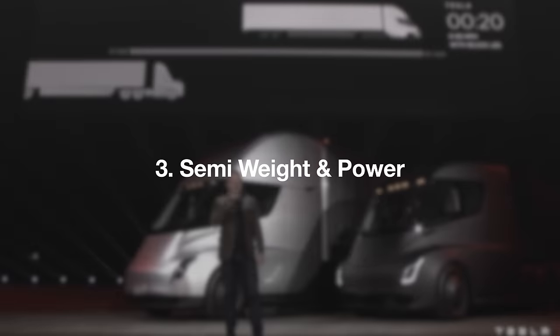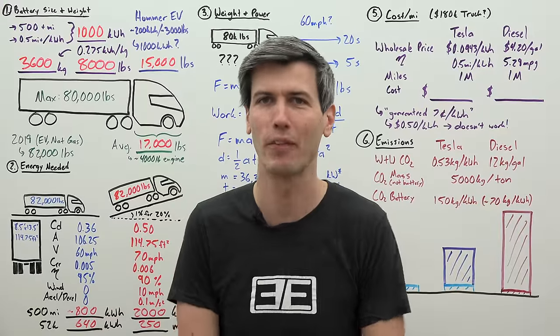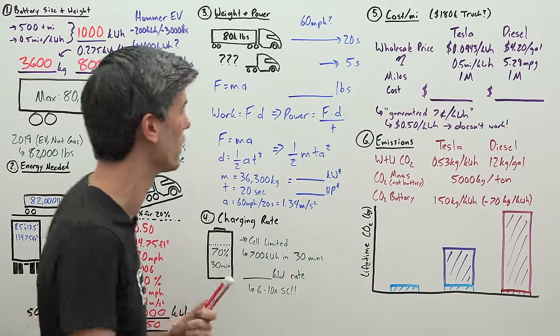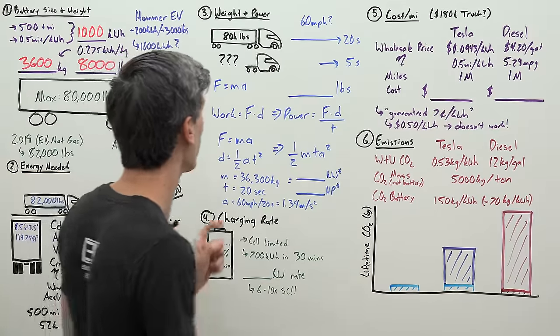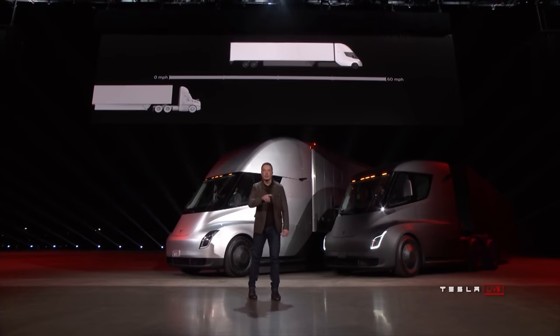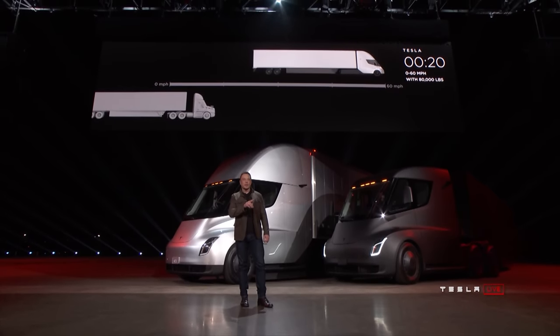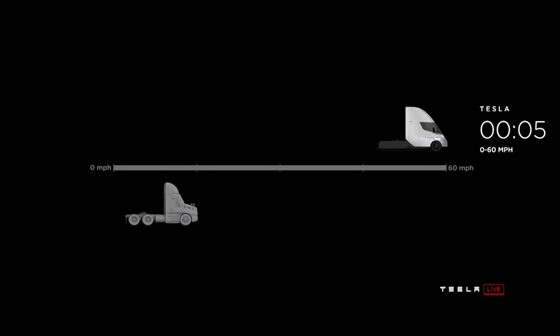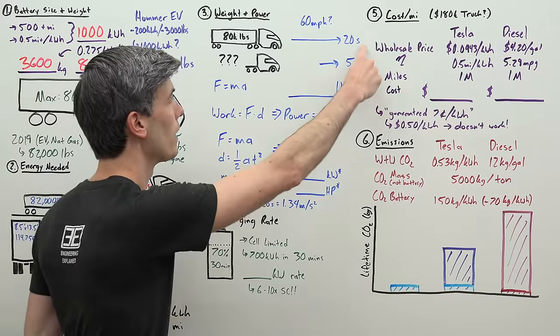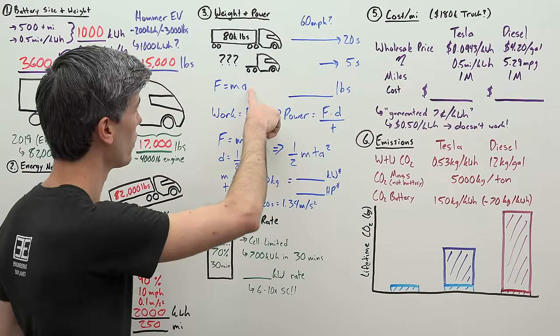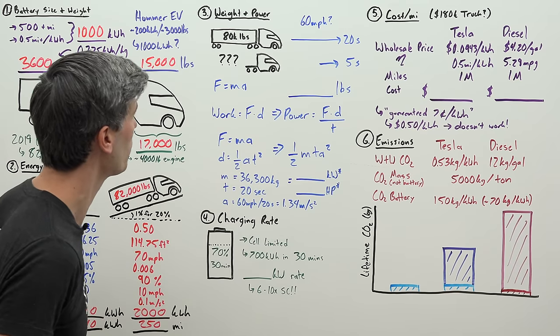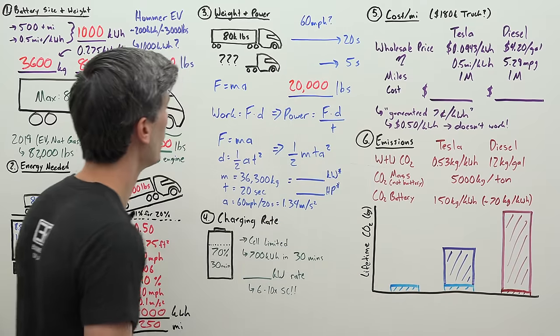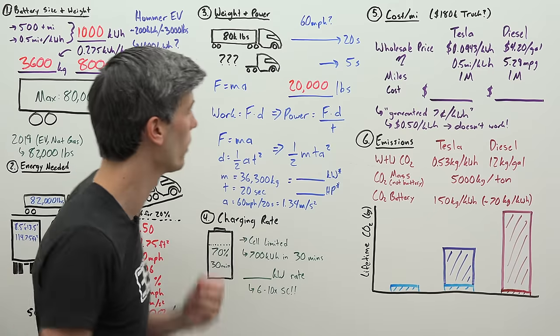Next we get to weight and power. Tesla does not provide these to us, however we can calculate both of them. Tesla provides information that allows us to calculate these two variables. They told us an 80,000 pound truck is able to accelerate to 60 miles per hour in 20 seconds. A truck of unknown weight without the trailer is able to accelerate to 60 miles per hour in 5 seconds. Force equals mass times acceleration. We've done something in a fourth of the time, meaning our acceleration is multiplied by four, which means we have one-fourth of the mass. So our Tesla semi is going to weigh about 20,000 pounds.